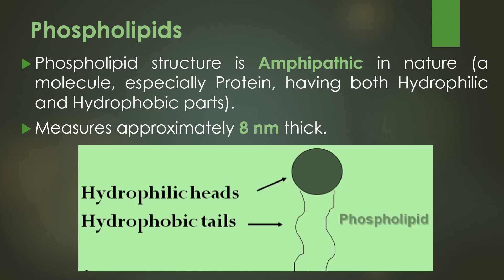Phospholipids are amphipathic in nature. Amphipathic means a type of molecule having both the water-loving hydrophilic and water-hating hydrophobic parts. So the phospholipids have hydrophilic heads, that is the water-loving part, and hydrophobic tails, that is the water-hating part.